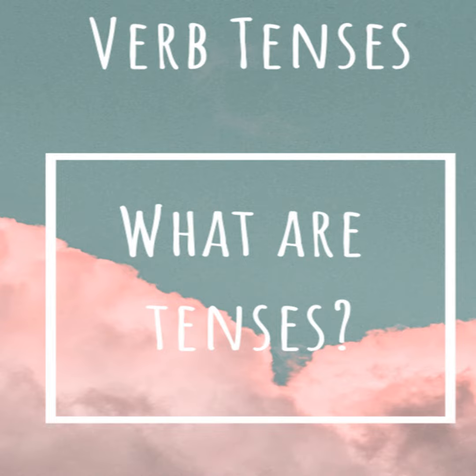The Simple Present. Uses: A. To indicate things which may happen at the moment or at any time in the present. This is common when one talks about habits, routines, and hobbies. In this case, it is often accompanied by adverbials of time such as sometimes, never, always, often, usually, etc.